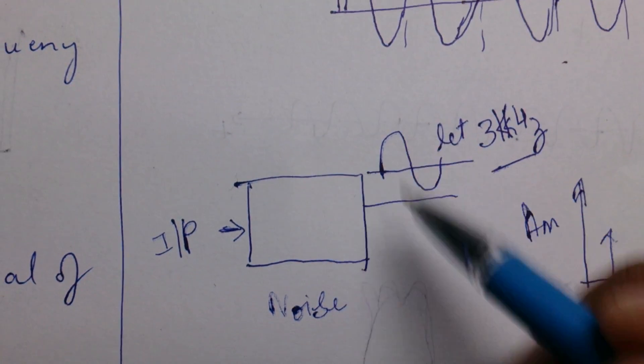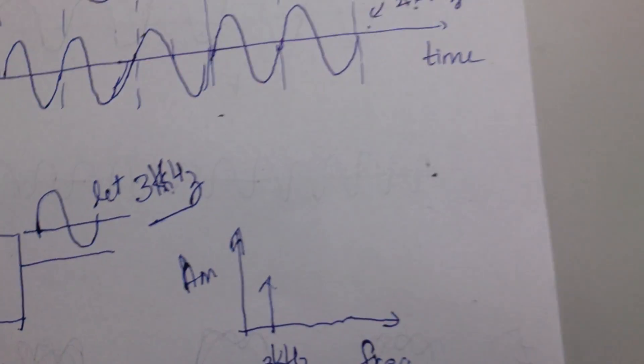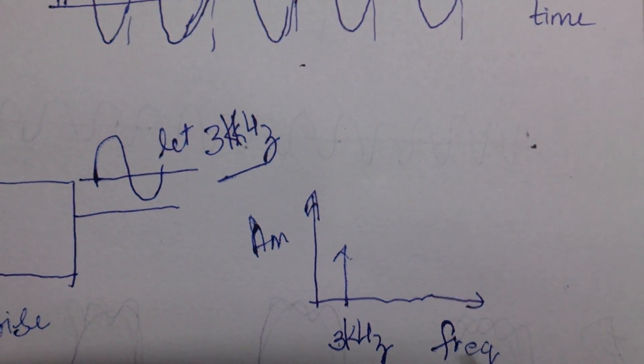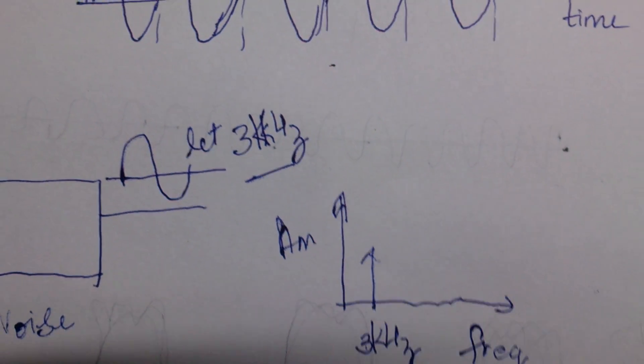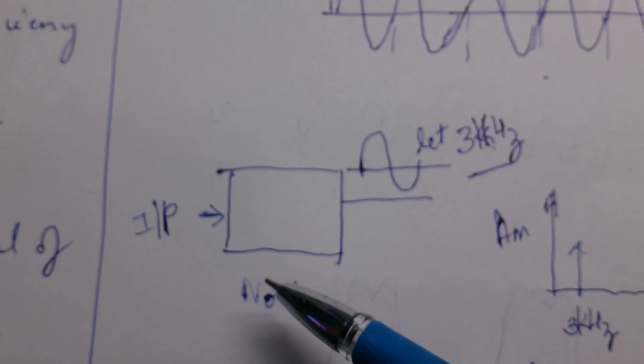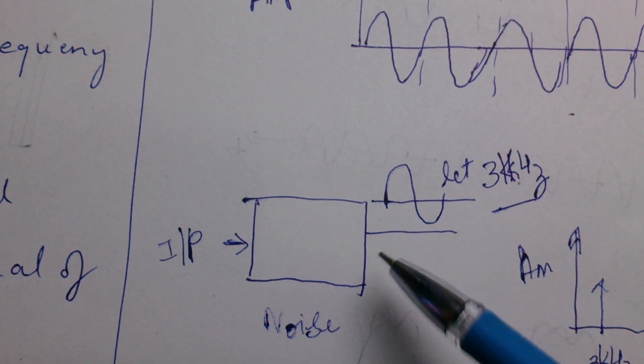Ideally if your signal doesn't have any noise, what you will be seeing in the spectrum analyzer would be a peak at three kilohertz. But in nature things don't work that way. You'll be having noise from other sources, thermal noise, switching noise, so there will be harmonics in addition to the signal of interest.